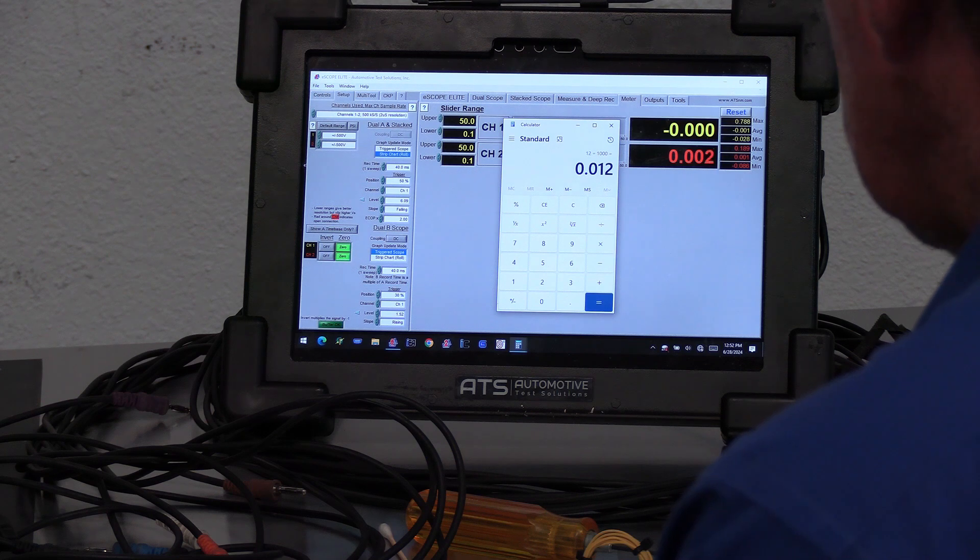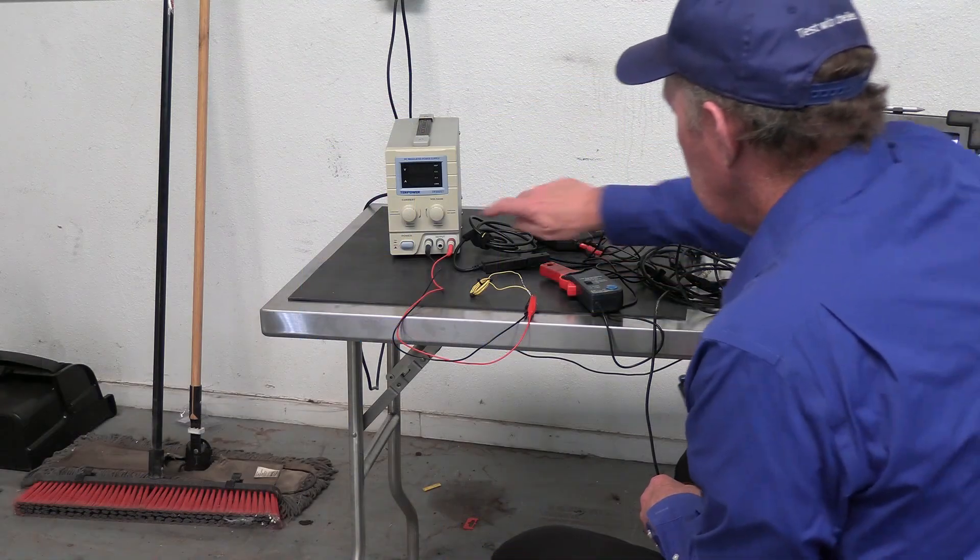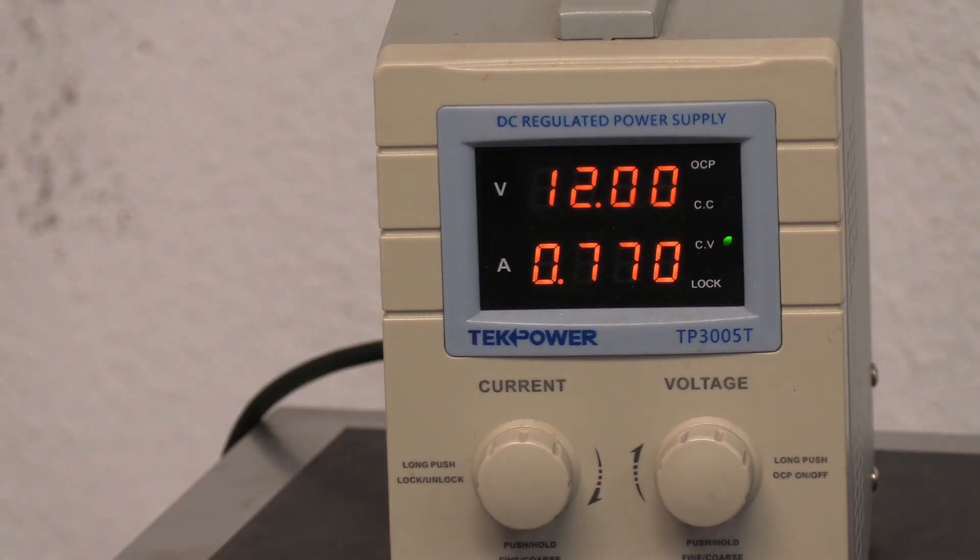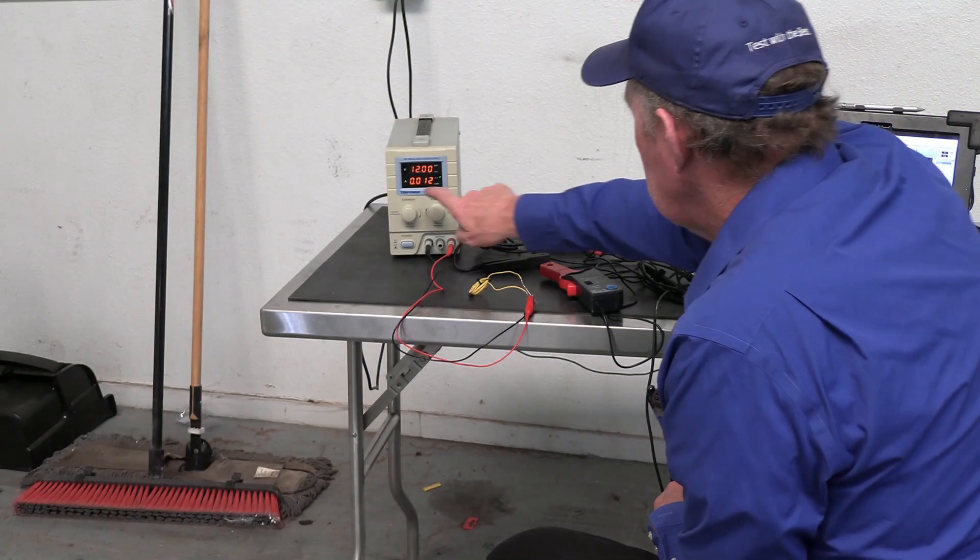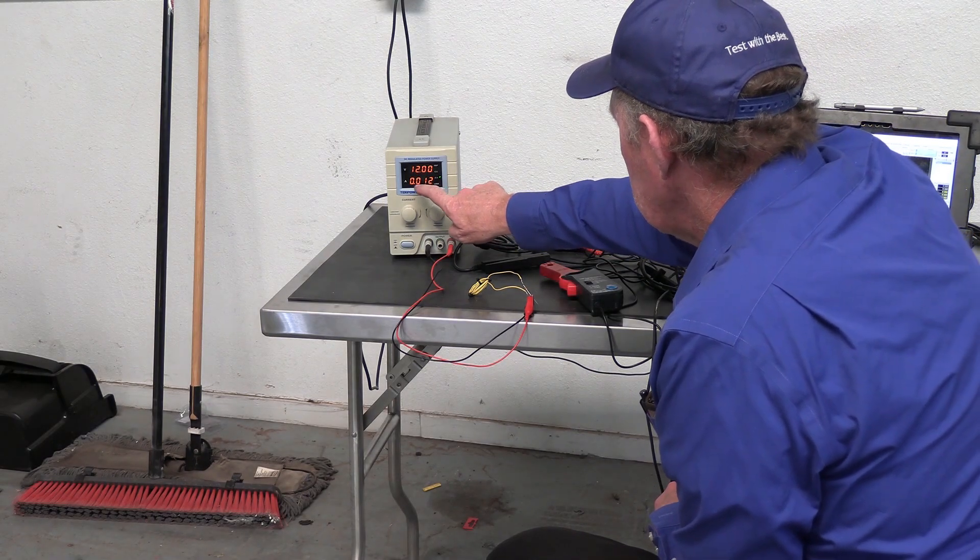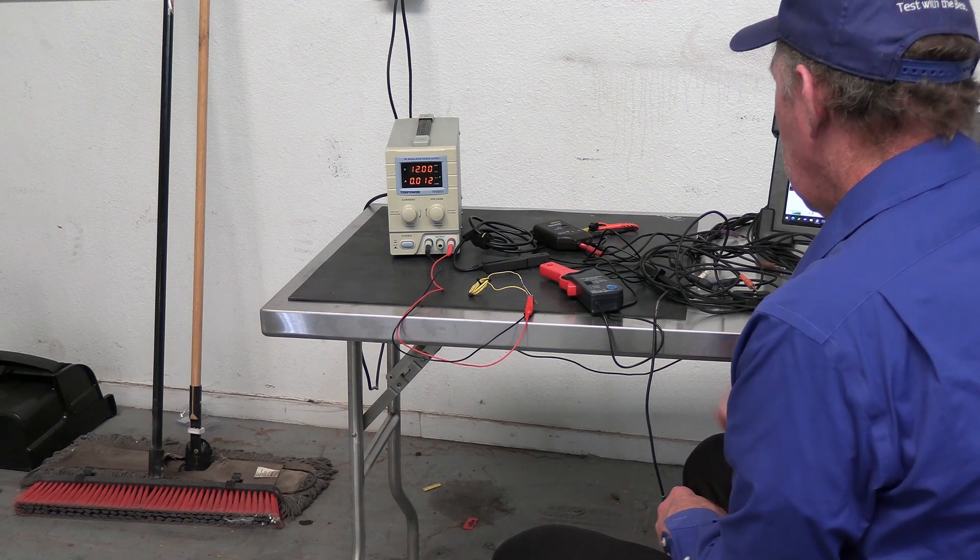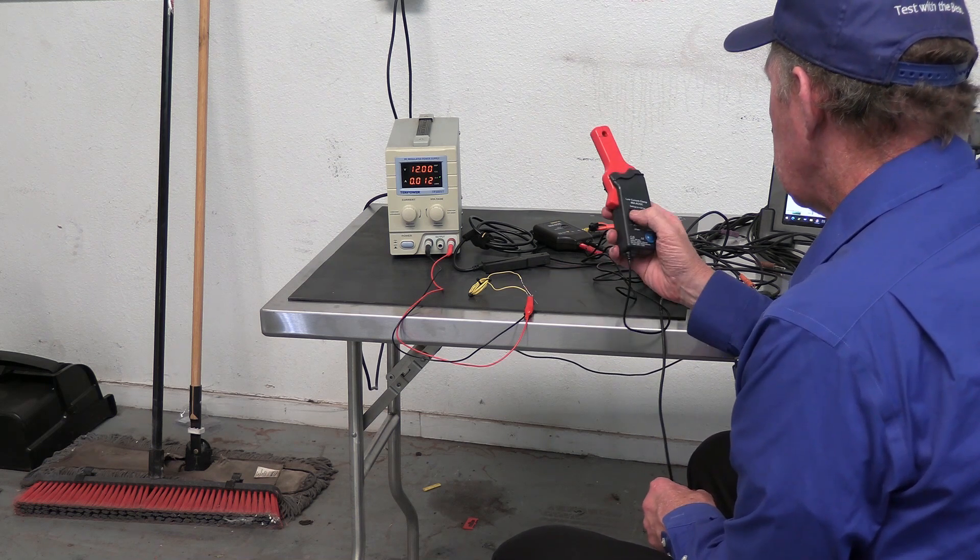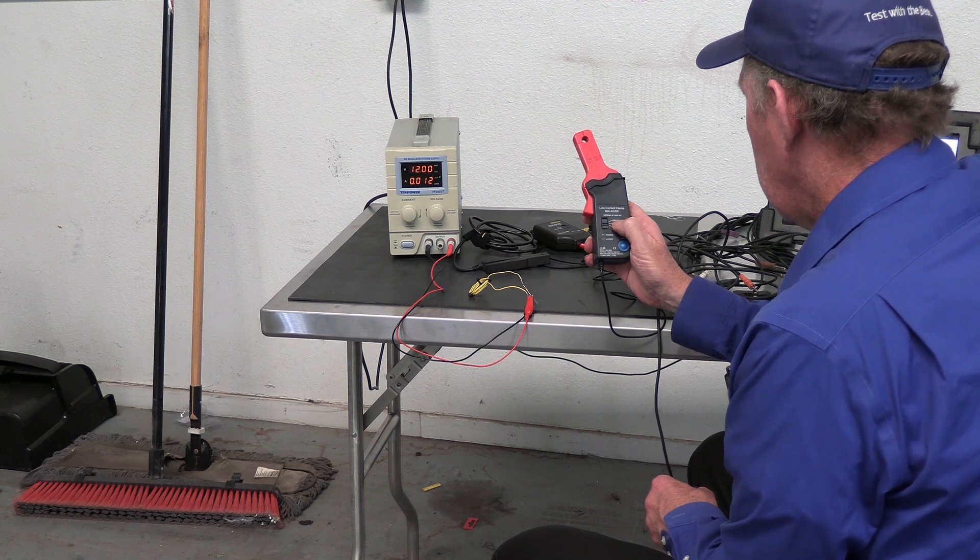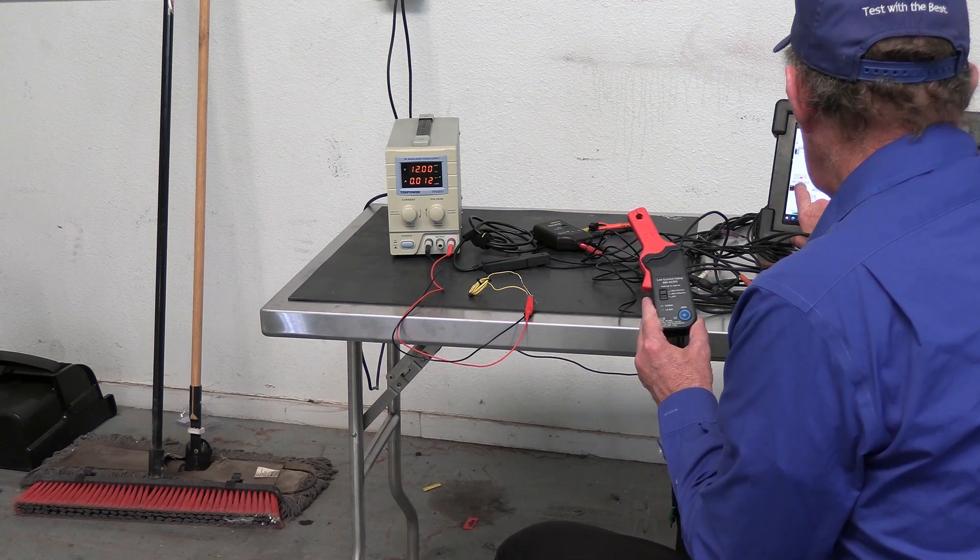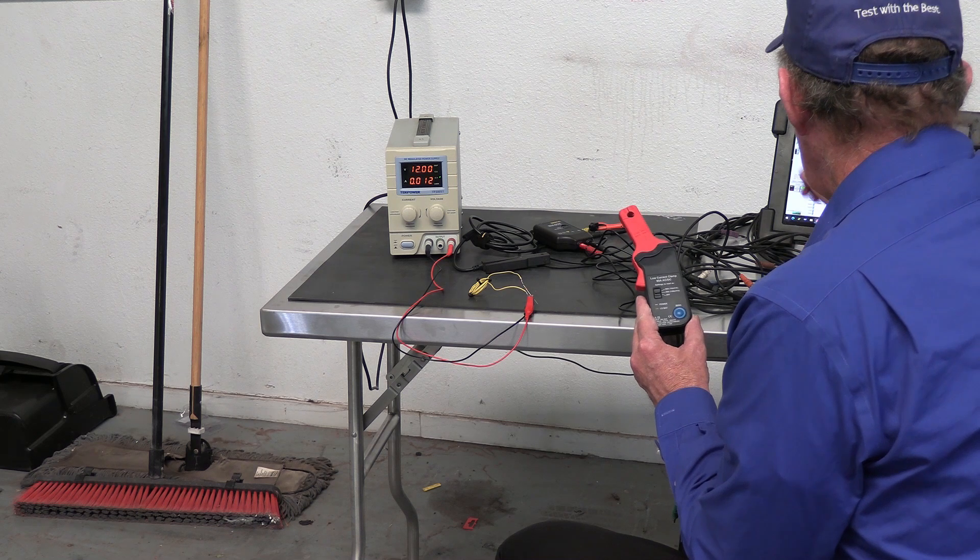So Ohm's Law says this is going to be 12 milliamps of current flow through this circuit. Now let's turn our power supply on. We can see the current is showing 0.012 just like the calculation shows. Now what I want to do is I want to take the current clamp, put it in the middle mode at 20 amps so it has more accuracy, and I want to zero that amp clamp.